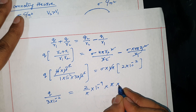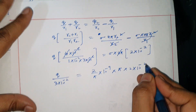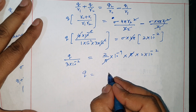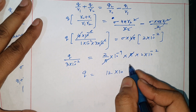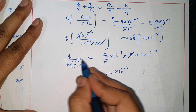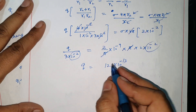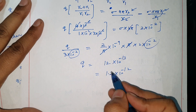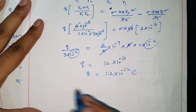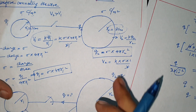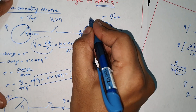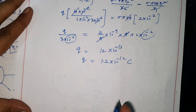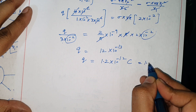Working through the calculation: 4 × 3 = 12, giving 12 × 10⁻¹³, which simplifies to 1.2 × 10⁻¹² coulombs. This is the charge Q transferred from sphere S2 to S1, equal to 1.2 picocoulombs.